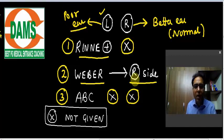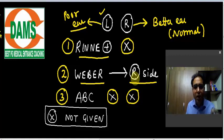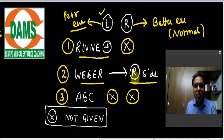Now the answer is: is it left conductive or left SNHL? First of all, it is a case of left-sided hearing loss; the right side we are assuming normal. Now we should interpret the given findings of Rinne and Weber.